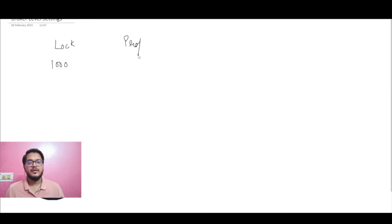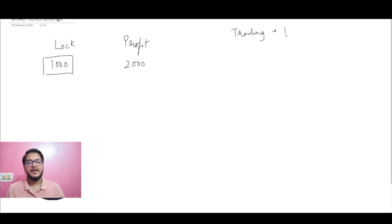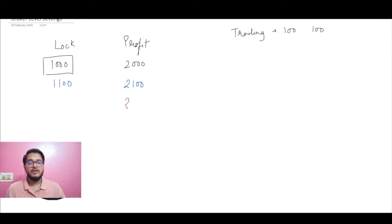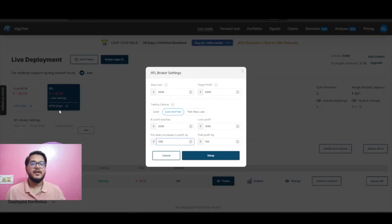Let us understand this better on an Excel sheet. Assume we put the lock at 1000 rupees — when profit reaches 2000, we lock 1000. We have defined trailing of 100 rupees on every 100 rupees. So as profit increases by 100, lock also increases by 100. When profit reaches 2100, lock increases to 1100. When profit reaches 2200, lock increases to 1200, and so on.